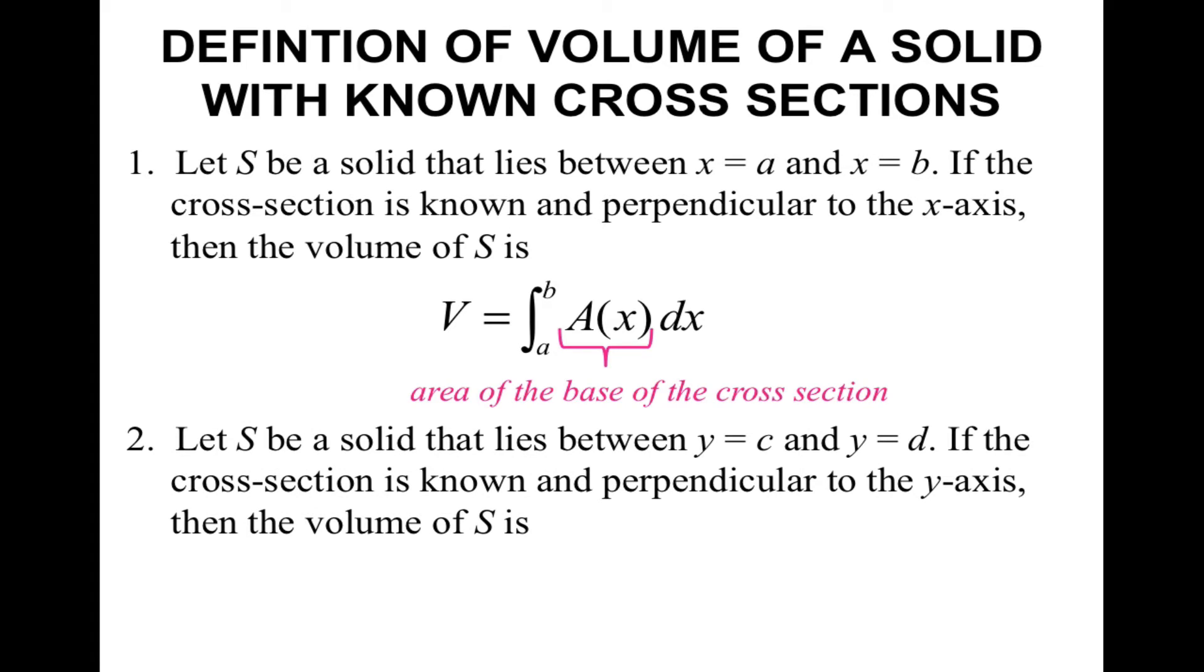The second part is what if you're going perpendicular to the y-axis. It's pretty much the same idea. Your cross-section now in a bird's eye view is going to have a horizontal rectangle. This time, it's going to be in terms of y and going from c to d.